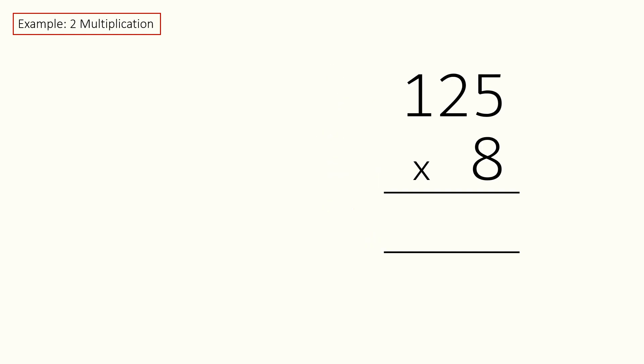Here we will start by multiplying 8 and 5 to get 40 with 4 as carryover. Next, we will multiply 8 and 2 to get 16 with 1 as carryover. Lastly, we will multiply 8 and 1 to get 8 with no carryovers.